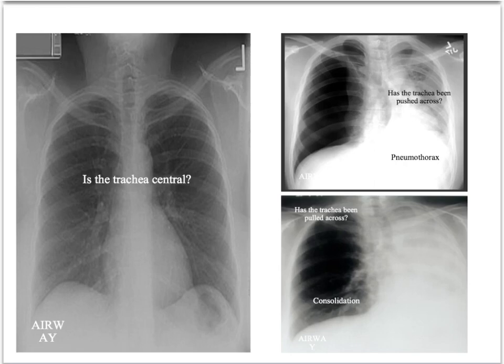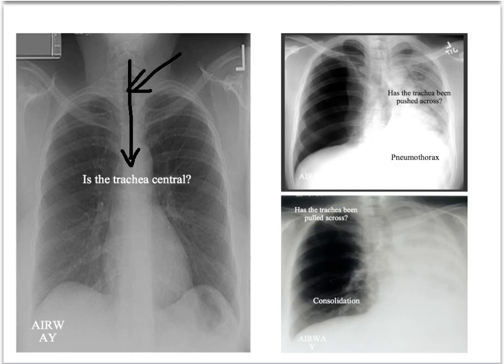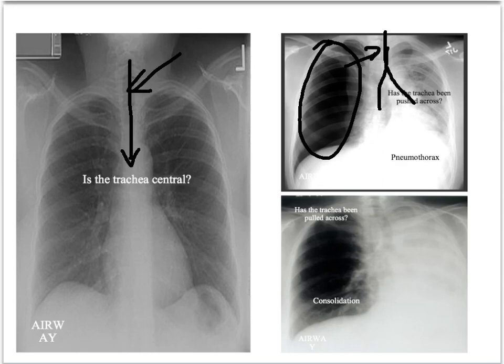Moving on to A — airway. The first thing you want to know is whether the trachea is central, in the midline, or has it been pushed or pulled across? In this example you can see the trachea running down the middle, equidistant between the two clavicles — that is a central trachea. In this other example, there is evidence of a pneumothorax, and as a consequence the pneumothorax has pushed the trachea across — you can see it running down and bifurcating over to one side.